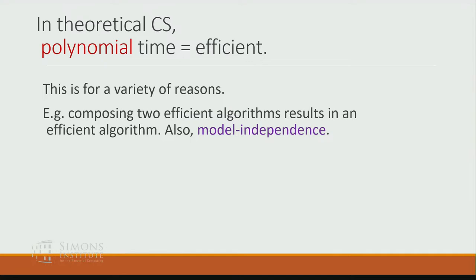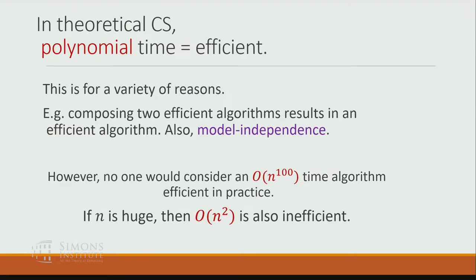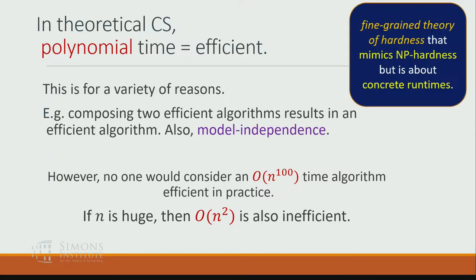In theoretical computer science, we often think of polynomial time as efficient, for a variety of good reasons: we can compose two polynomial time algorithms to get another polynomial time algorithm, and polynomial running times are preserved even if we change the model — whether it's a Turing machine or random access machine. However, we would not consider an n^100 time algorithm to be efficient in practice, and when n is huge, even n² is sometimes inefficient. That's why we want a fine-grained theory of hardness that mimics NP-hardness but is applicable to concrete polynomial running times.